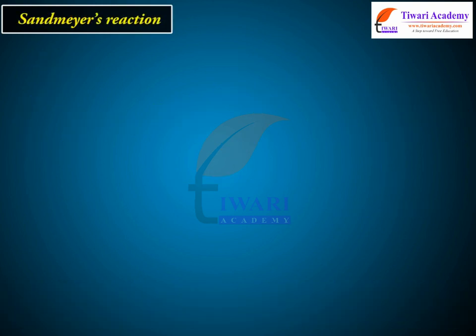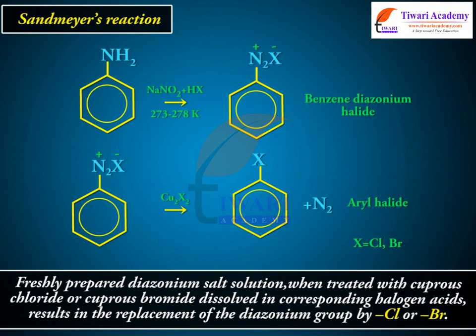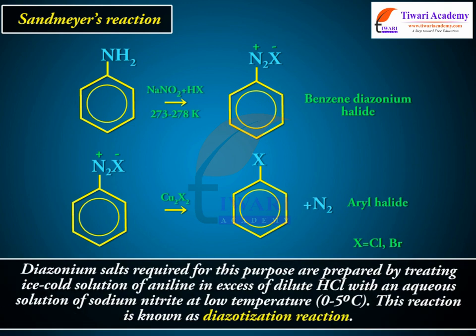Sandmeyer's reaction: freshly prepared diazonium salt solution, when treated with cuprous chloride or cuprous bromide dissolved in corresponding halogen acids, results in the replacement of the diazonium group by Cl or Br. The diazonium salts required are prepared by treating an ice-cold solution of aniline in excess dilute HCl with an aqueous solution of sodium nitrite at 0 to 5 degrees Celsius. This is known as the diazotization reaction.